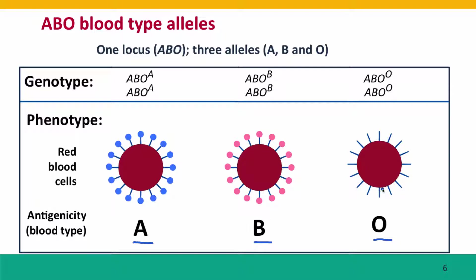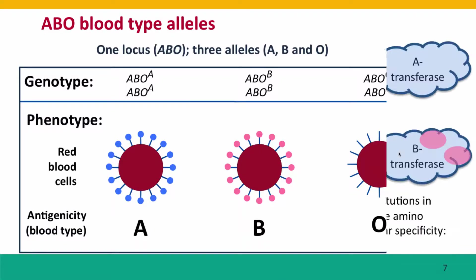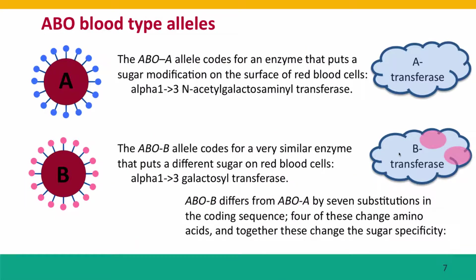The phenotypes are determined by measuring what kind of antibodies your blood reacts to, and what those antibodies are detecting is the presence of specific sugars on the red blood cells. People who are homozygous for the A allele have A type sugars, people homozygous for the B allele have B type sugars, and people homozygous for the O allele have no sugars on their red blood cells. Here's the biochemical molecular basis: the A allele codes for an enzyme that puts a modified sugar on the surface of red blood cells.